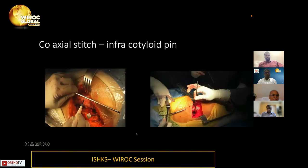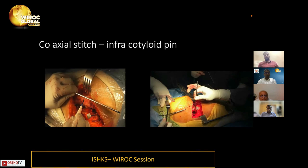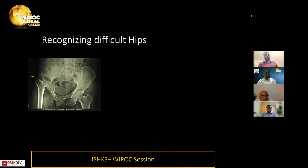Leg length can be assessed using either the coaxial stitch or an infracotyloid pin. With the coaxial stitch, one can also evaluate the combined offset, as elegantly described by Dr. Vijay Bose in his paper.